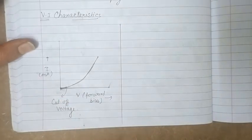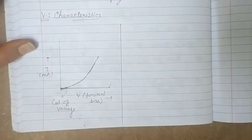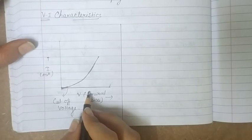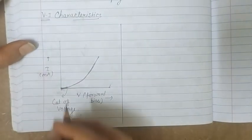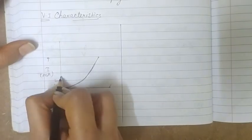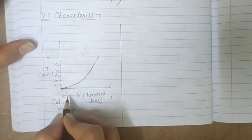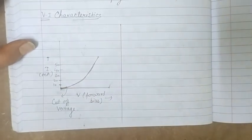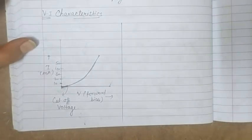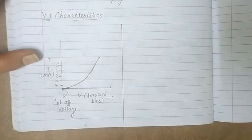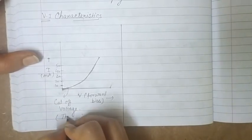Before the cutoff voltage, the depletion layer plays a dominant role in controlling the motion of charge carriers and we cannot get a good value of current. But after the cutoff voltage, the depletion region effectively ends and the current starts increasing rapidly — actually exponentially — even for a very small increase in voltage. With a small increase in forward bias voltage above the cutoff voltage, we get a large value of current and majority charge carriers can flow easily across the junction.